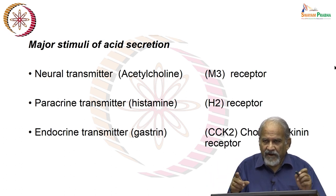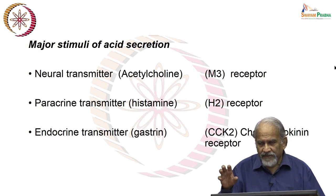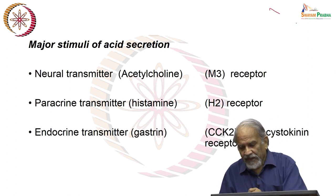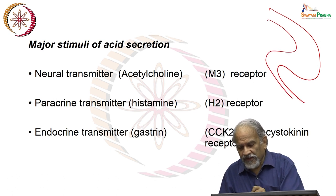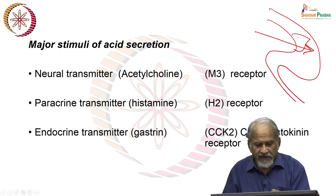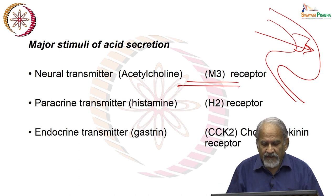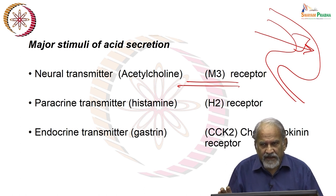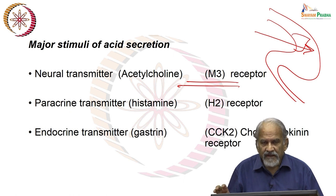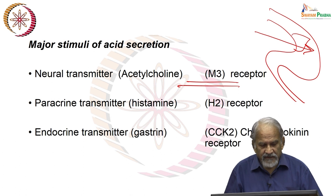This all happens primarily through three mechanisms in the gut. First, there are muscarinic receptors — the cholinergic receptors — primarily M1, M2, and M3. All are involved, but it is primarily M3 receptors that are responsible for the release of hydrochloric acid.